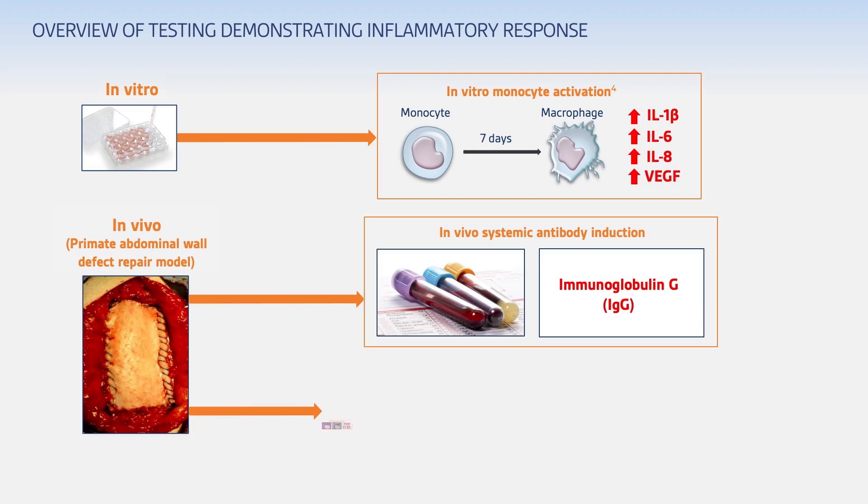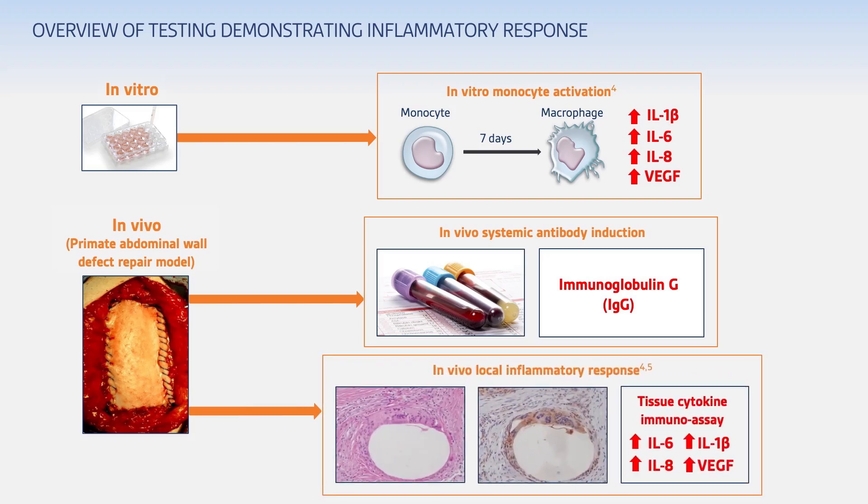Following explantation, we can see if there is a localized inflammatory response by looking at the histology of the implant and surrounding host tissue, staining for specific inflammatory cell markers, and conducting immunoassays looking for the same biomarkers as in our in vitro test.